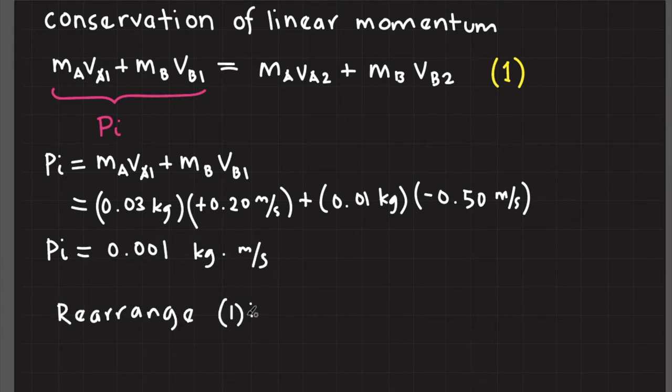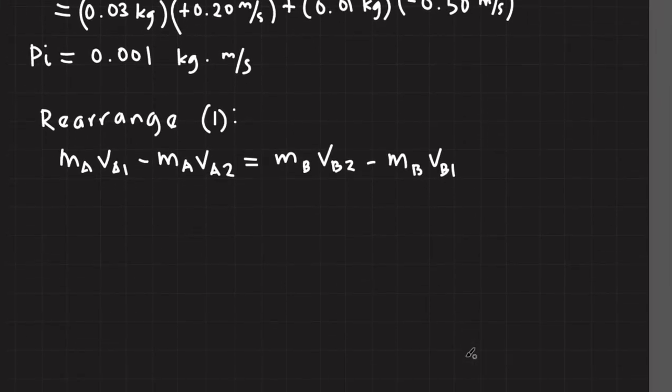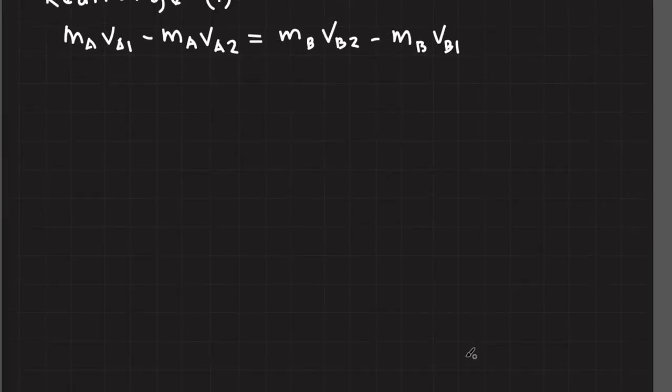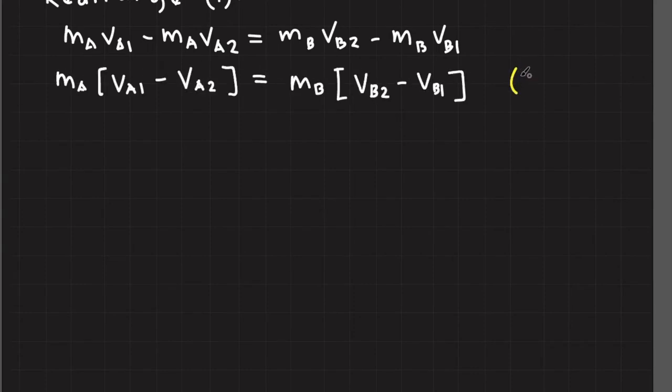Let's rearrange equation 1 in such a way I can factor out mass sub A and mass sub B. Let's call the resulting equation as equation 2.